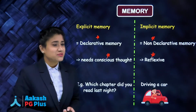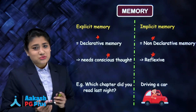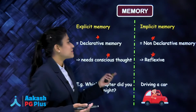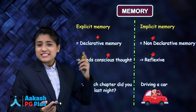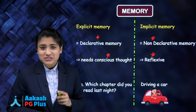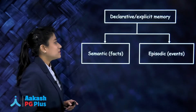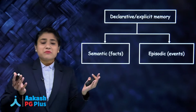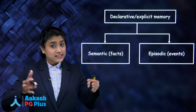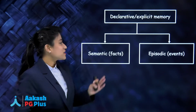Implicit memory is reflexive. For example, driving a car comes under implicit memory. Both explicit memory and implicit memory are again divided into different subtypes.